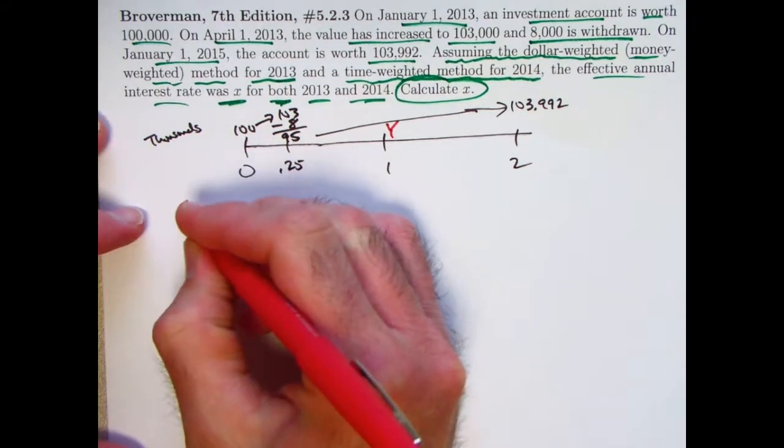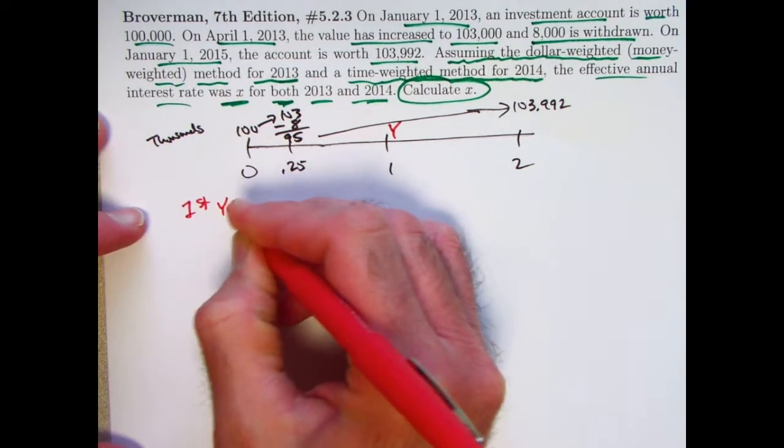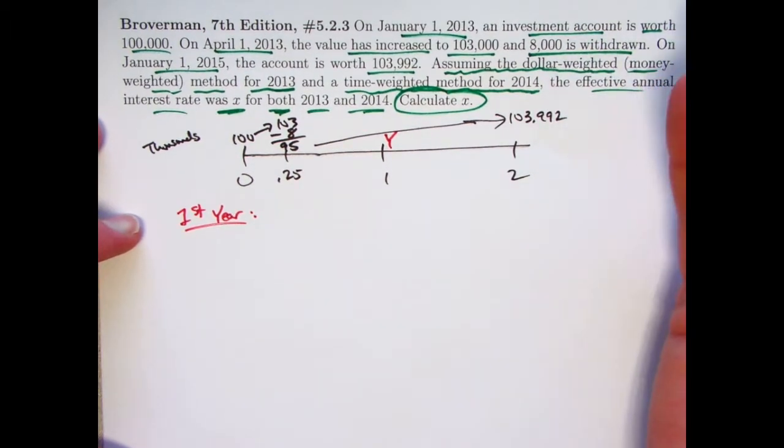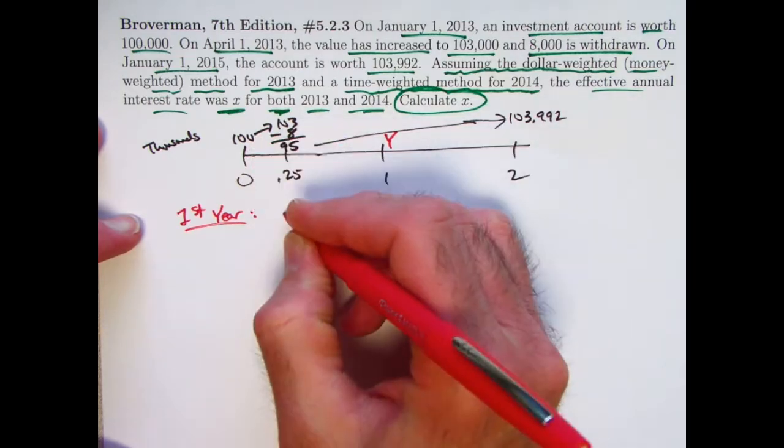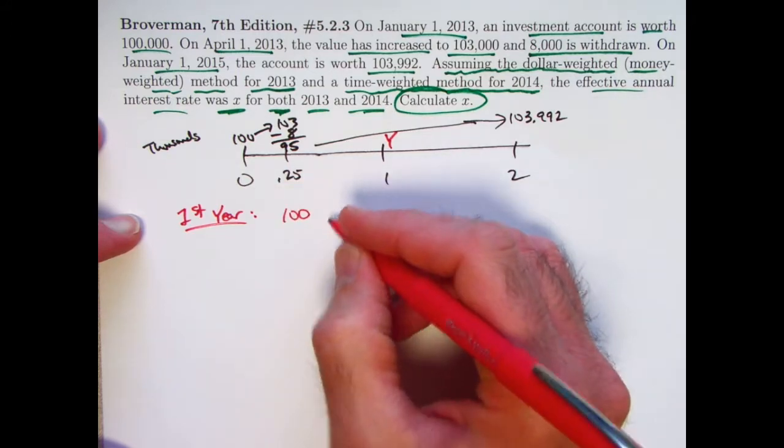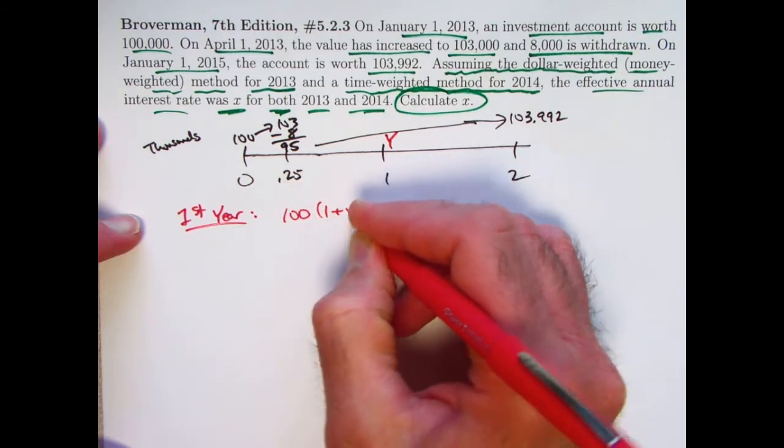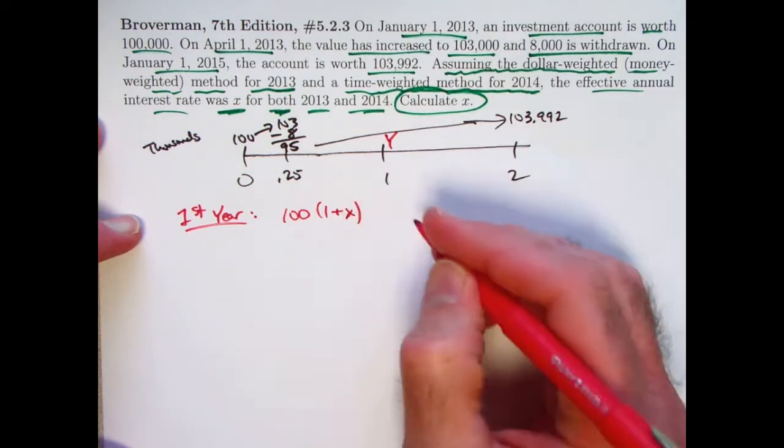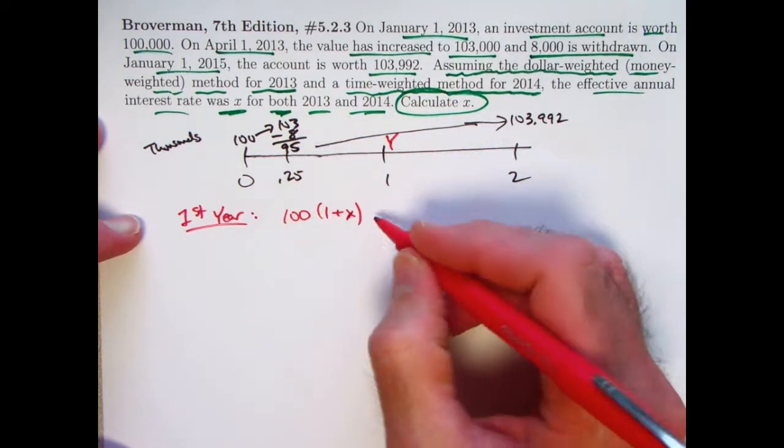Now let's think about the first year. Again, dollar-weighted or money-weighted, you really are thinking about the same kind of idea as with internal rate of return or yield rate, except you use simple interest rather than compound interest. We're doing it for one year. We've got a deposit at time zero that stays in the account for the entire first year, so it gets multiplied by one plus x to find its value at time one, its accumulated value.